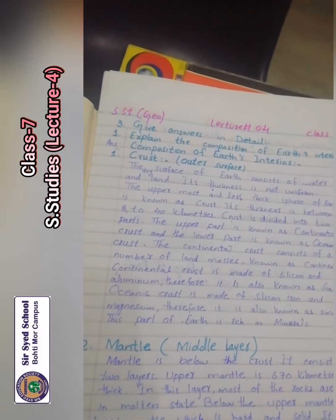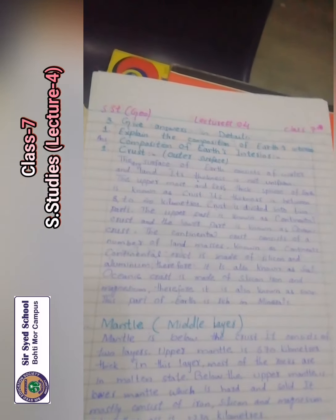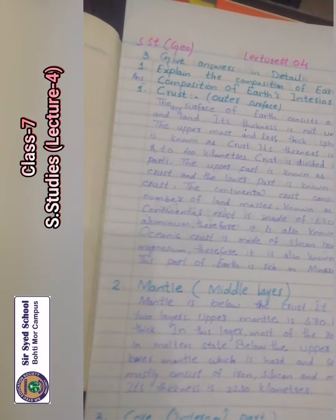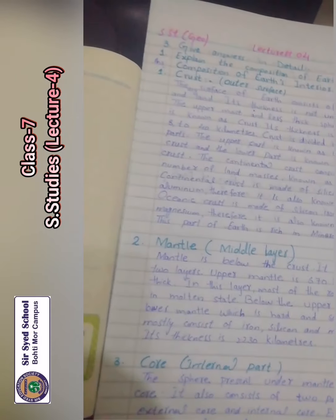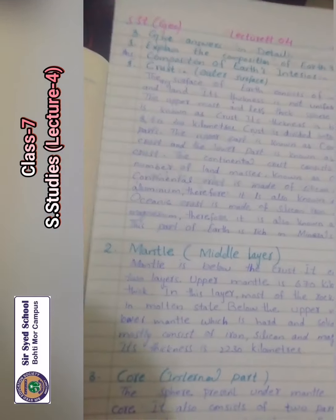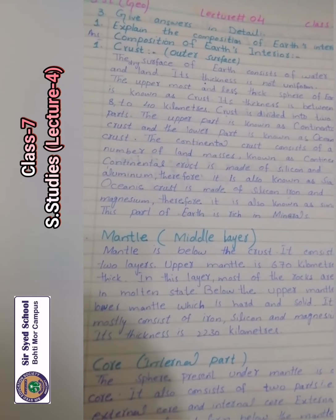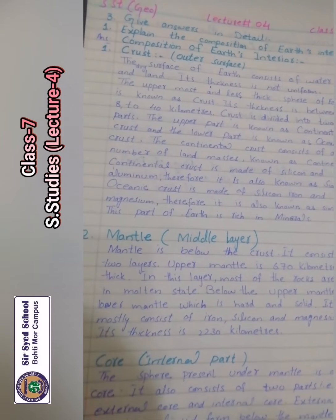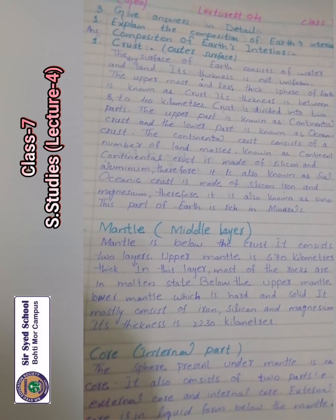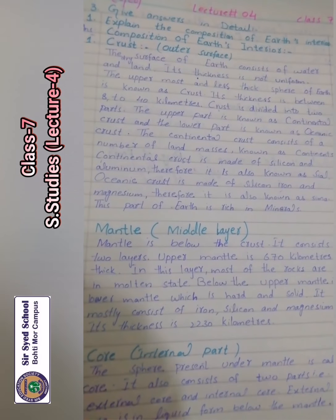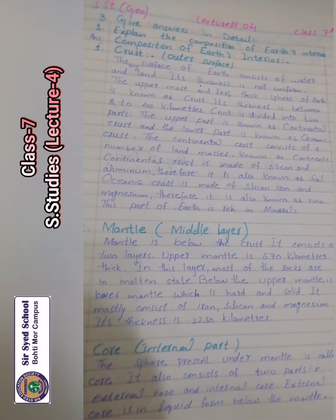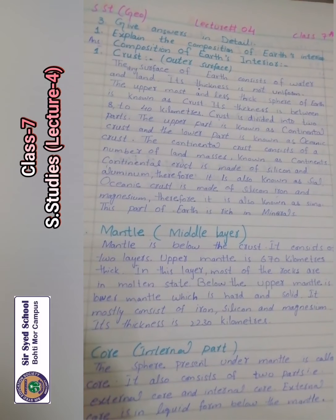Next, number two: Mantle — Middle Layer. Mantle is below the crust and consists of two layers: upper mantle and lower mantle. The upper mantle is approximately 60 km thick and this layer consists of more molten rocks. The lower mantle is hard and solid and is made of iron, silicon and magnesium. Its thickness is 2,230 km.